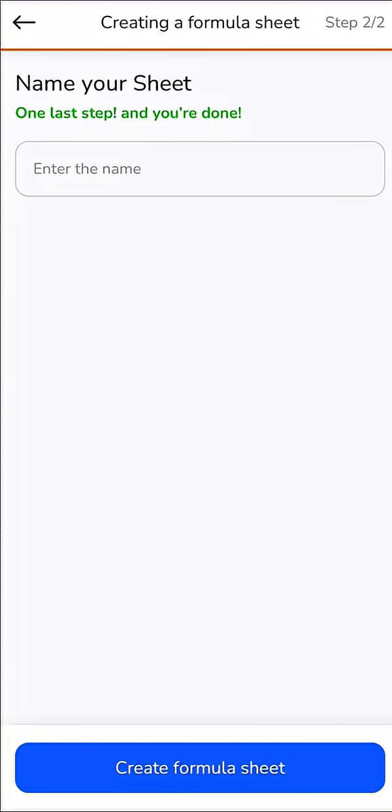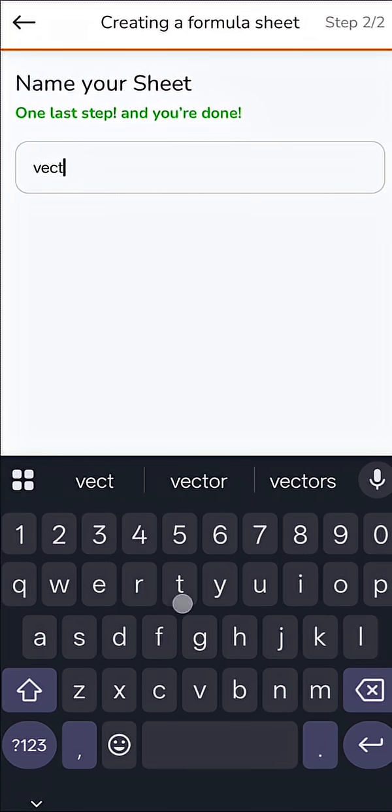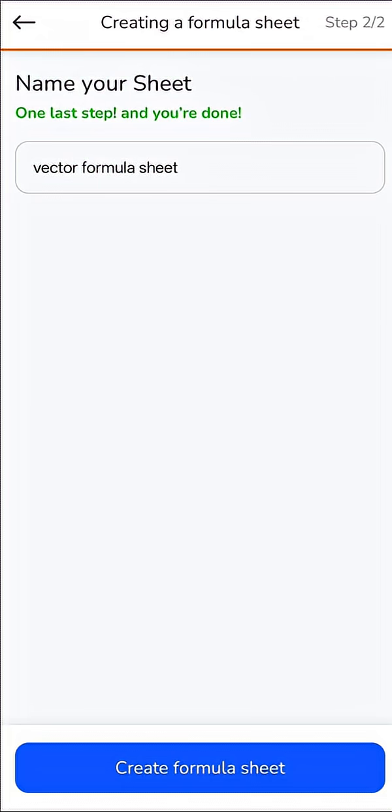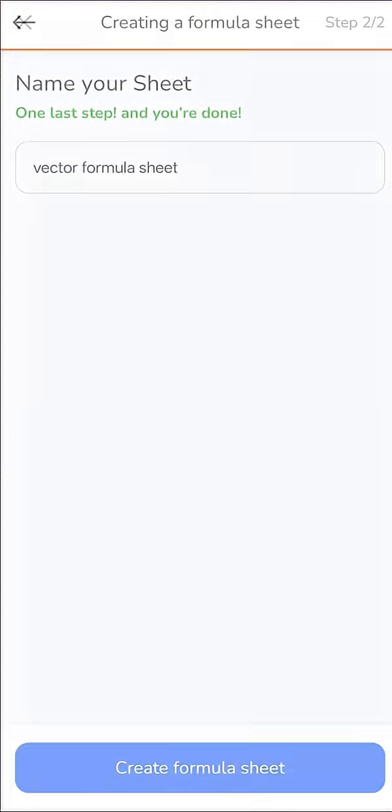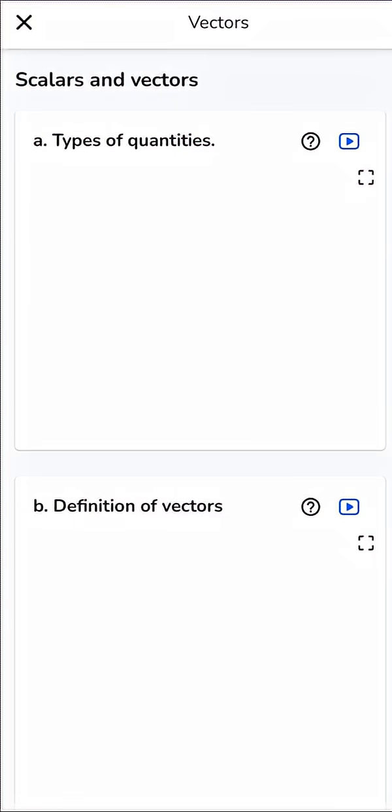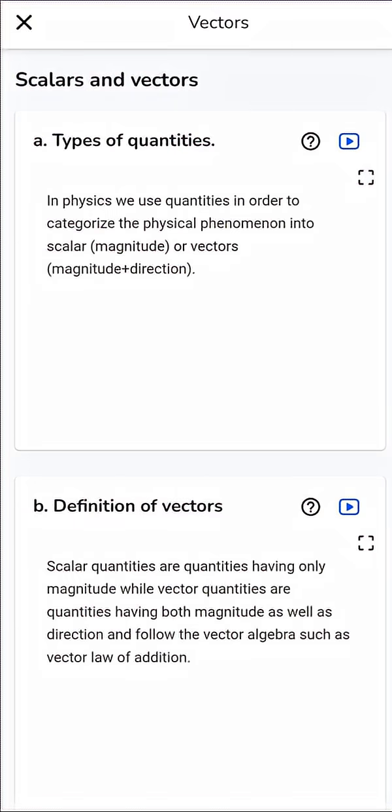Now, just give your sheet a name. We'll name it Vector Formula Sheet. Once you name it, hit on Create Formula Sheet. Now, when your sheet loads, you'll see all the important formulas nicely arranged for quick revision. And at the top right, you'll notice two options.